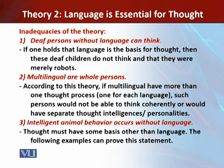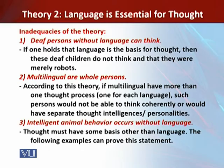Another inadequacy concerns multilinguals as whole persons. The belief that multilinguals — people having multiple linguistic knowledge — have a personality split into different languages has been discussed here. According to this theory, if multilinguals have more than one thought process, one from each language, each person would not be able to think coherently and would have separate thought, intelligence, and personalities.